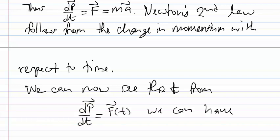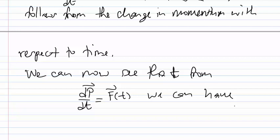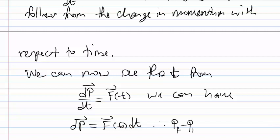Starting from dP/dt equals F(t), we can write dP equals F(t) dt. Integrating both sides, P_final minus P_initial equals the integral from 0 to T of F(t) dt.